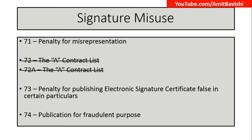Think of sections 71, 73, and 74 as a staircase or a domino — they fall one after the other. Section 71 is the penalty for misrepresentation. What it says is: if a person goes to a certifying authority to get an electronic signature, or goes to the controller to get a license to become a certifying authority, and the information provided by that applicant is misrepresented, any fact is suppressed, or false information is given, then the section 71 penalty will be applicable.